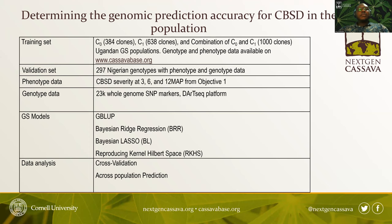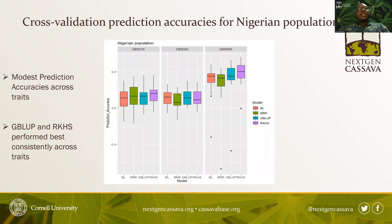We wanted to see how the models would perform at cross-validation within the Nigerian population, and also do an across-population prediction to see if the Ugandan population could predict cassava brown streak disease resistance in the Nigerian population. Cross-validation within the Nigerian population showed modest prediction accuracy. GBLUP and RKHS showed the best performances, confirming that we can use genomic selection to improve CBSD resistance in our population.